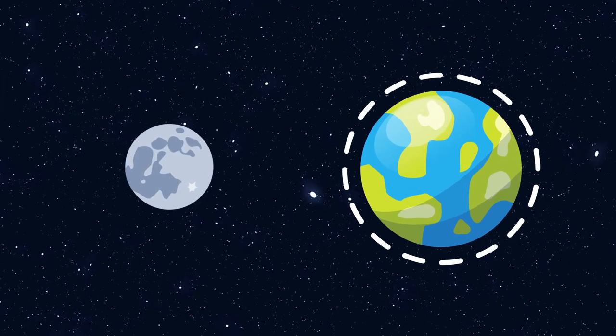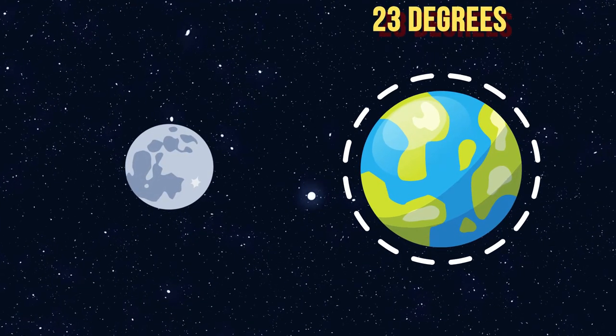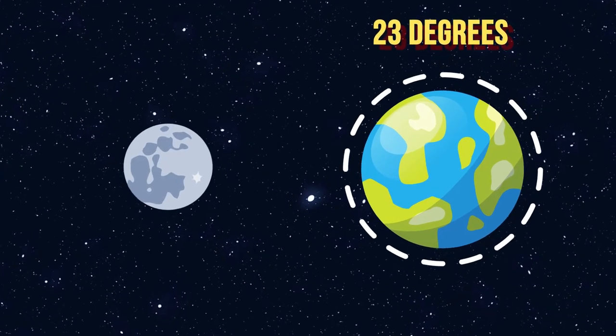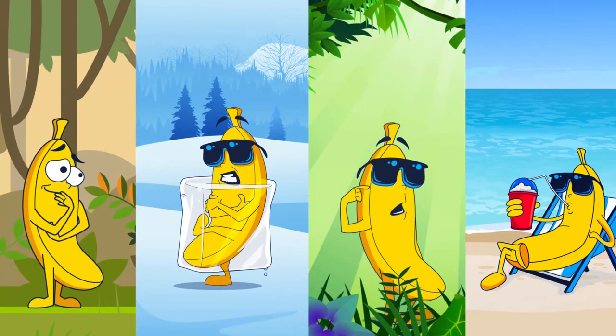In addition, the moon stabilizes Earth, giving it a perfect inclination of 23 degrees, providing us the opportunity to see all four seasons.